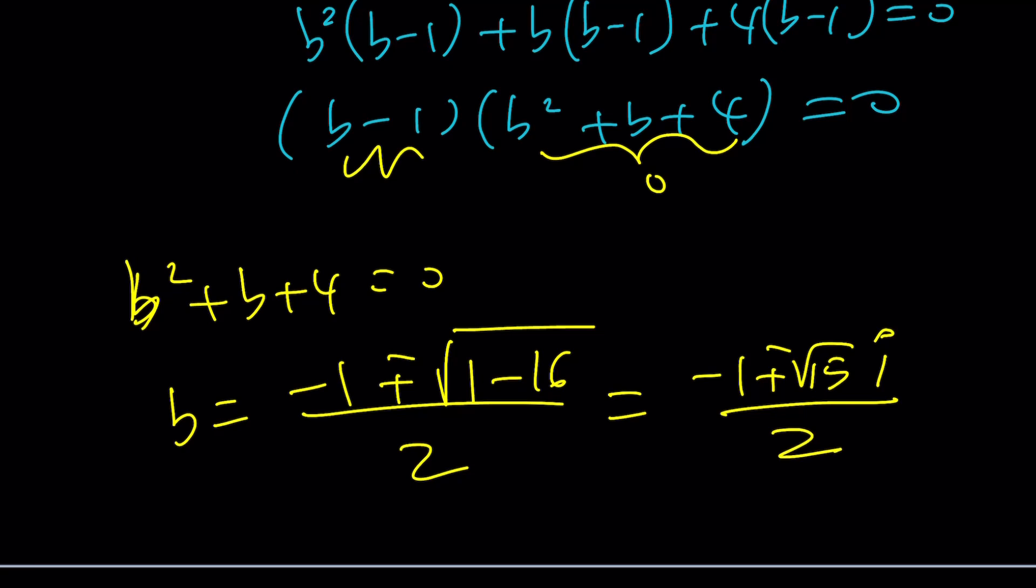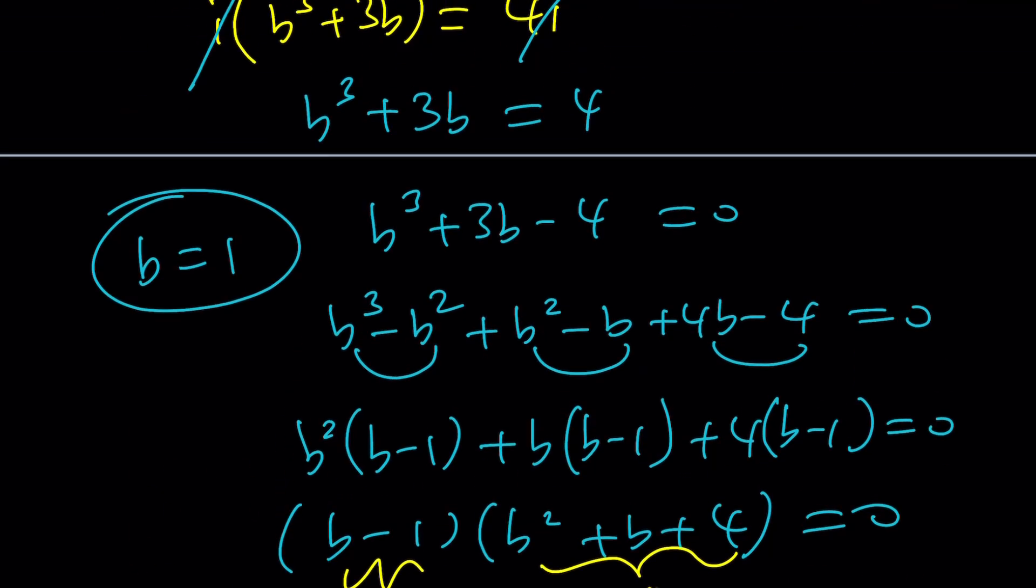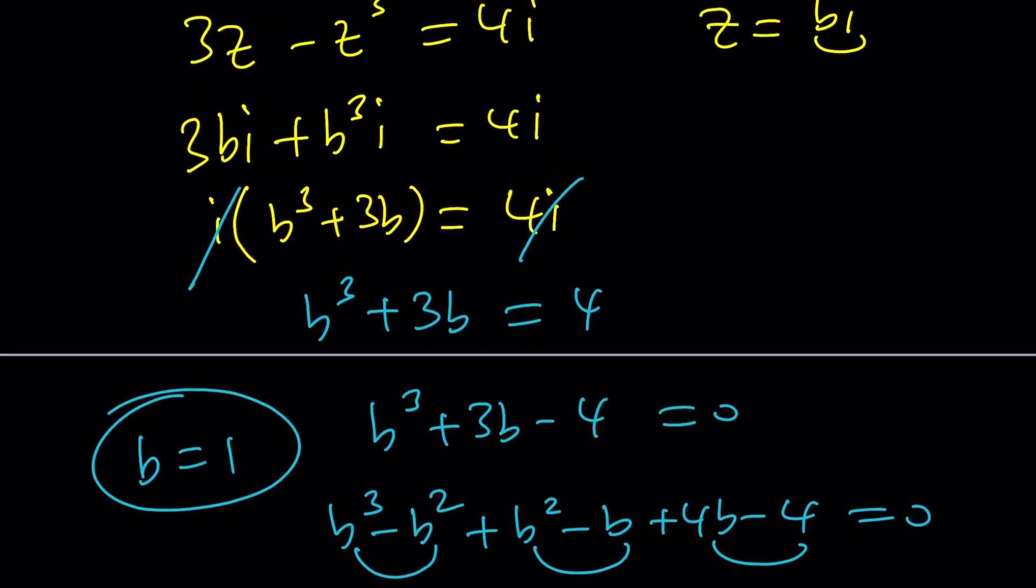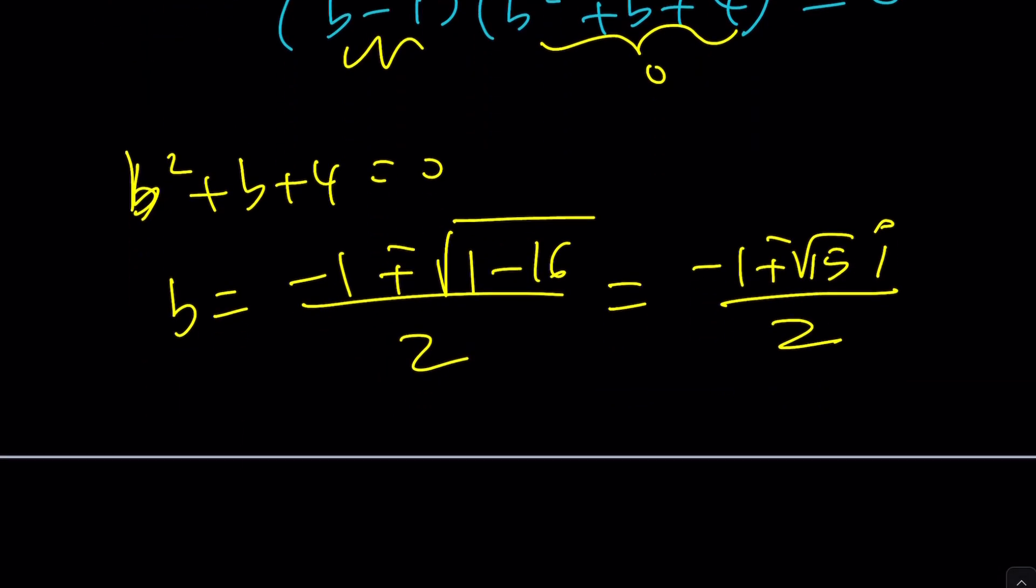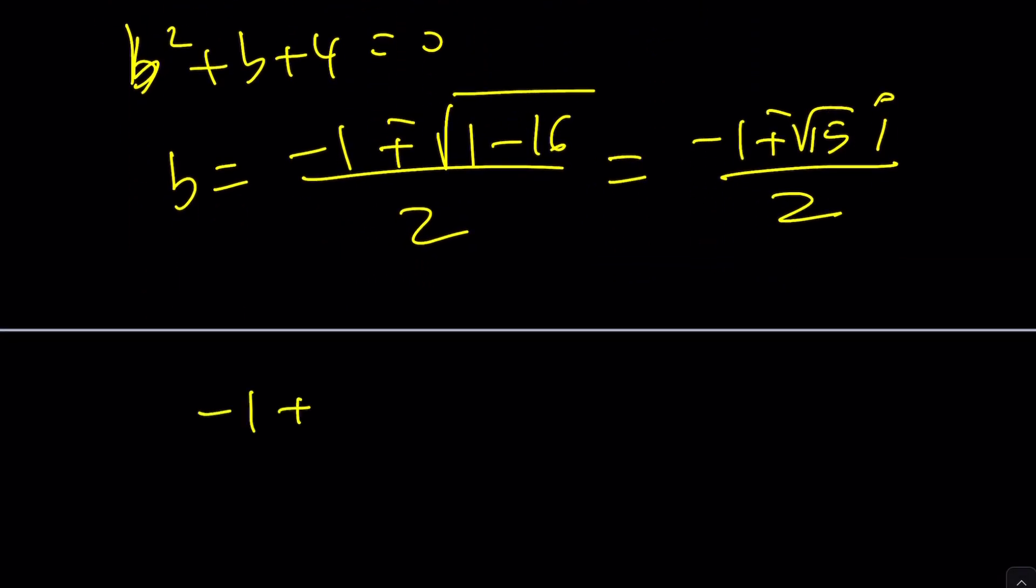But wait a minute. Isn't b supposed to be real? Well, I think so, because when we wrote z as bi, b was supposed to be real. But guess what? Maybe it doesn't have to be. So what is going to happen? b equals 1 will give you i as a solution. And the other solutions can be found by multiplying this number by i. Because this is b. But b wasn't real in this case. What happened? Maybe someone can explain this.